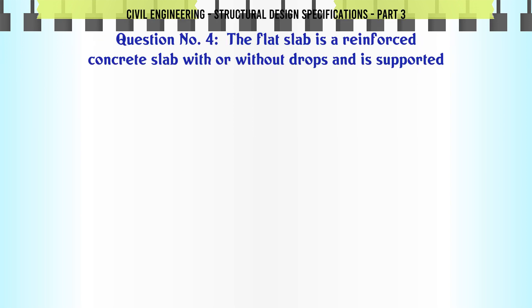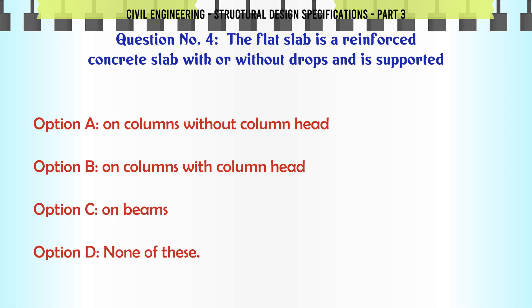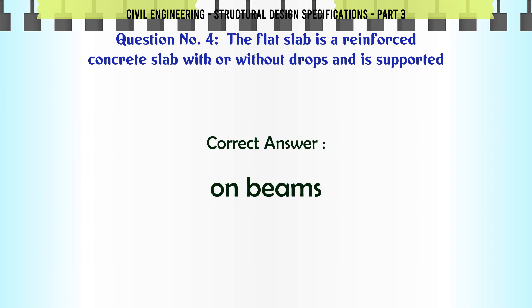The flat slab is a reinforced concrete slab with or without drops and is supported: a. On columns without column head, b. On columns with column head, c. On beams, d. None of these. The correct answer is: on beams.